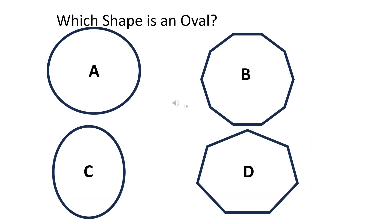Which shape is an oval? The right answer is C.